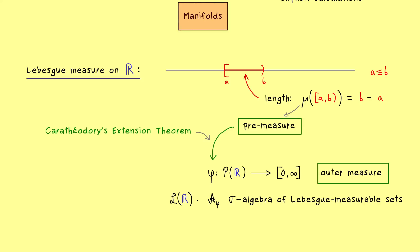This sigma algebra L(R) consists of subsets of R. Most importantly, L(R) is not equal to the whole power set. In other words, there are some annoying sets which are not Lebesgue measurable. However, the good thing is that they usually don't occur in applications, so all the sets we want to measure we can find in L(R).